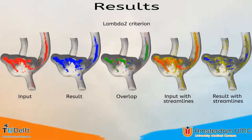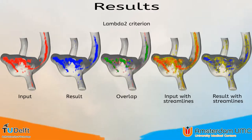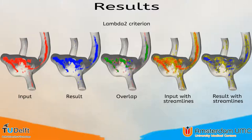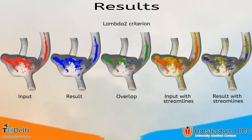The Q-criterion is often used to determine the location of vortex cores. As can be seen in the image, these vortex cores are at the same locations in both the input measured data and the result of our approach. This further demonstrates that the flow structures are maintained in the data after our approach was applied.